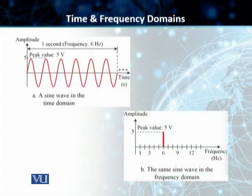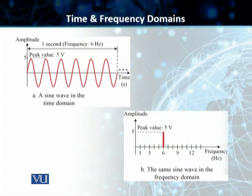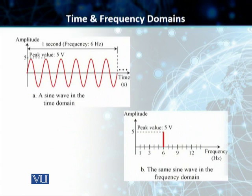We'll start with a sine wave which has an amplitude of 5 volts and a frequency of 6 hertz. Because this is a time domain plot, we have amplitude on the y-axis and time in seconds on the x-axis. This is a sine wave in the time domain. If we convert this time domain plot into a frequency domain plot with the same amplitude and the same frequency, it is now represented on the x-axis by a single spike at 6 hertz, showing a peak amplitude of 5 volts. The frequency domain plot is much easier and less complex than the time domain plot.